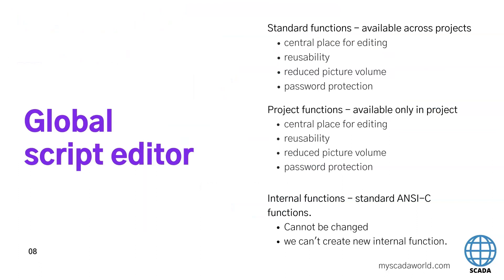The last option where we can put C actions is the global script editor. Inside here we can put some standard functions, project functions, and internal functions. The standard functions are available across the project — so anytime you create one standard function, you can use it in all projects you have on your computer. And if you want to change this function, you make this in the central editor and all functions you use in your project will be replaced.